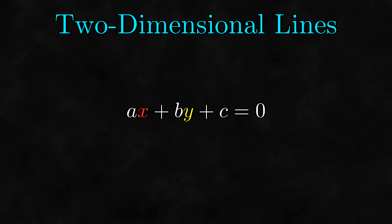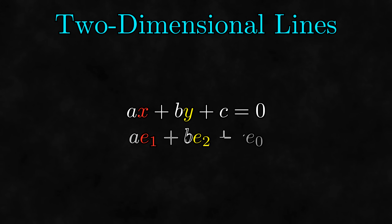Now the next example from the previous video is 2-dimensional lines. You might think that this space is 2-dimensional because of the name, but math throws us a curveball here. In this linear space, we represent lines using equations in this form. Looking at this equation, it looks like a linear combination with 3 terms, not 2. In fact, in my video focusing on this linear space, we saw that we can find 3 vectors that act as a basis for this linear space under this correspondence. Thus, despite the name, the linear space of 2-dimensional lines is actually a 3-dimensional space.